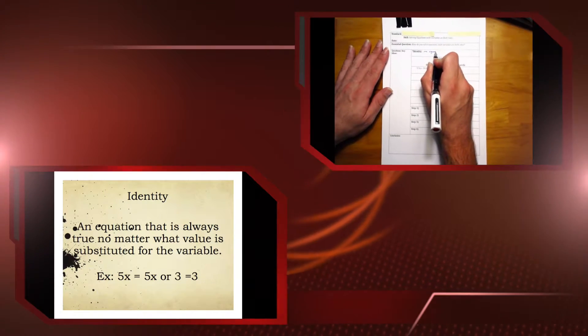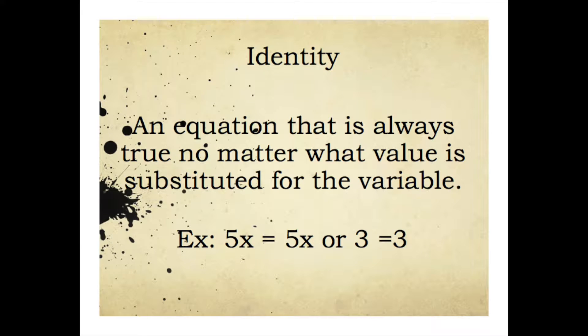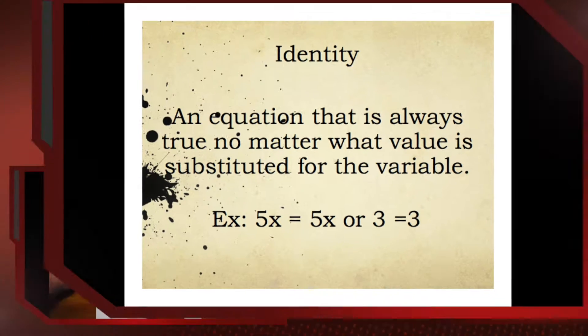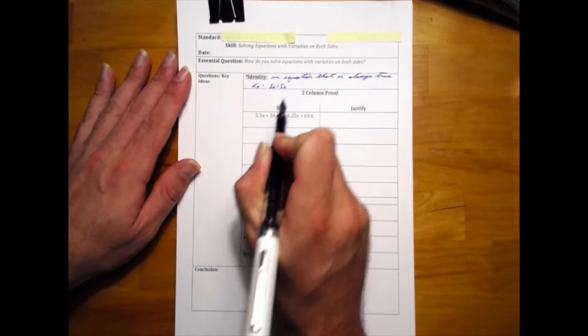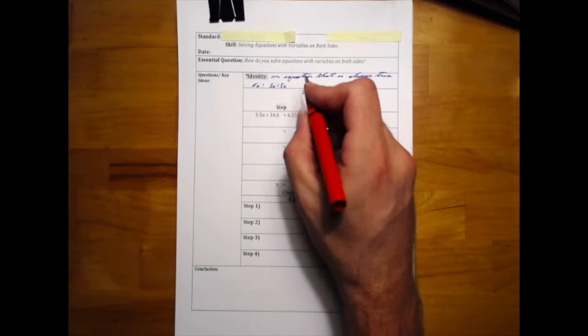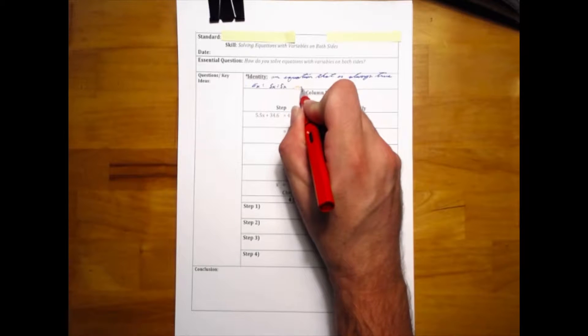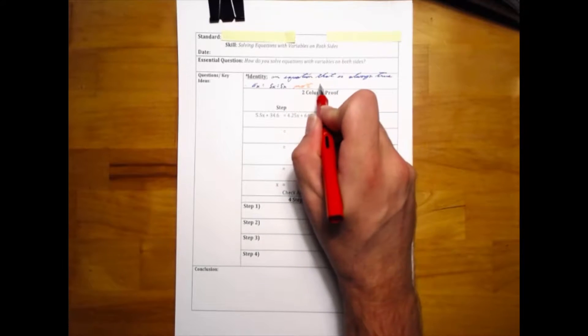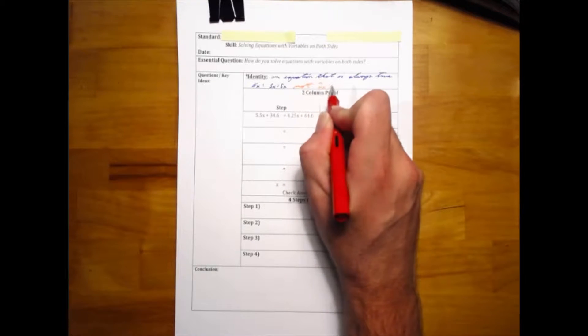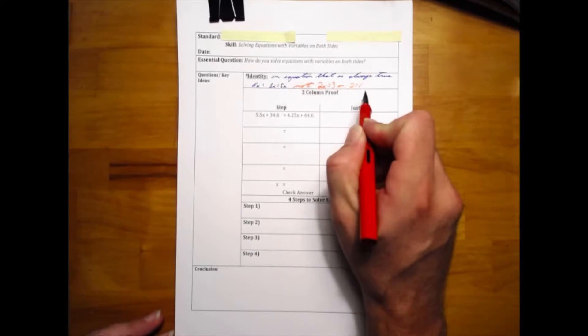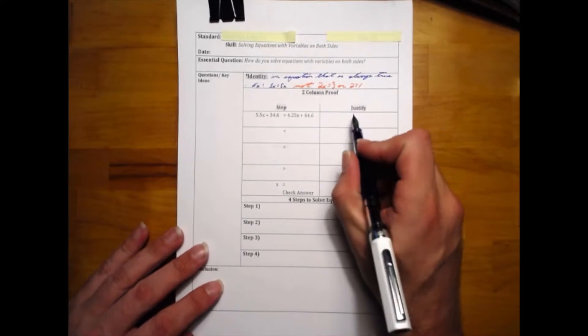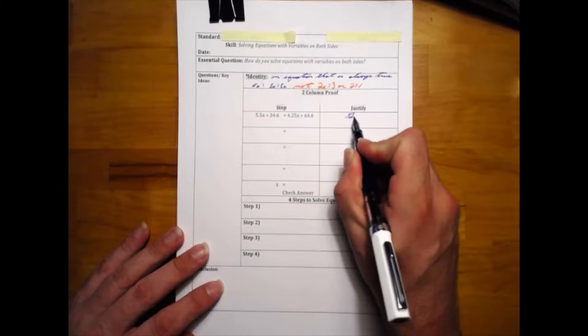identity is an equation that is always true no matter what value you substitute for the variable. An example would be 5x equals 5x. But it is not 2x equals 3, or 2 equals 1—these are not always true or are always false. So to look at an example, we look at